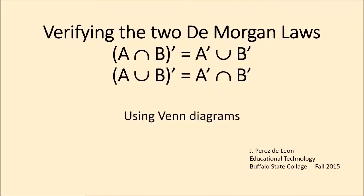Verifying the two De Morgan laws. The first law states: the complement of A intersection B equals A complement union B complement. The second law states: the complement of A union B equals A complement intersection B complement. Both laws will be verified using Venn diagrams.